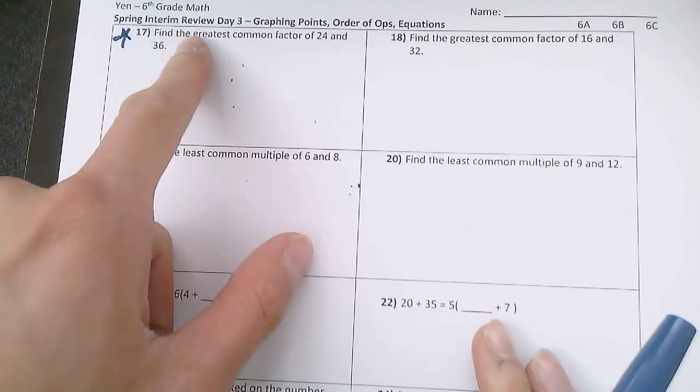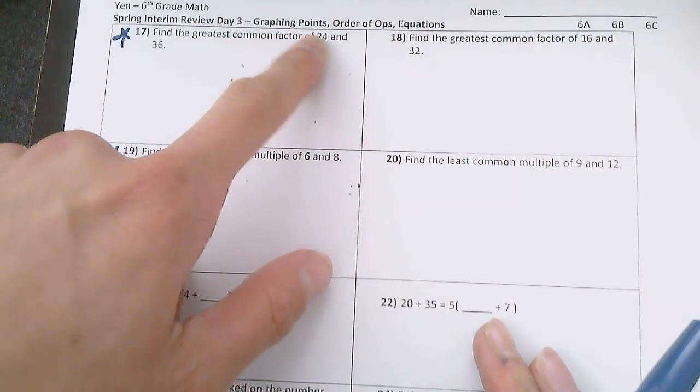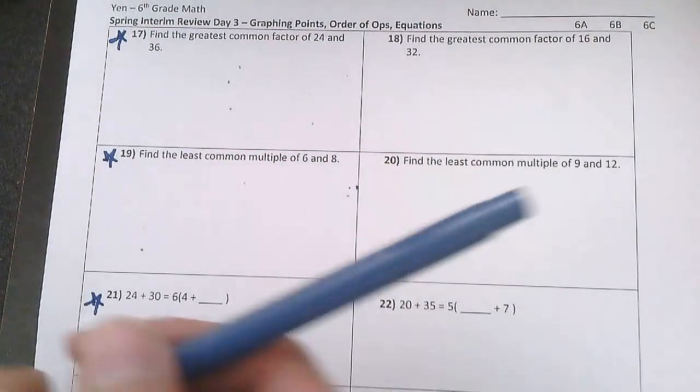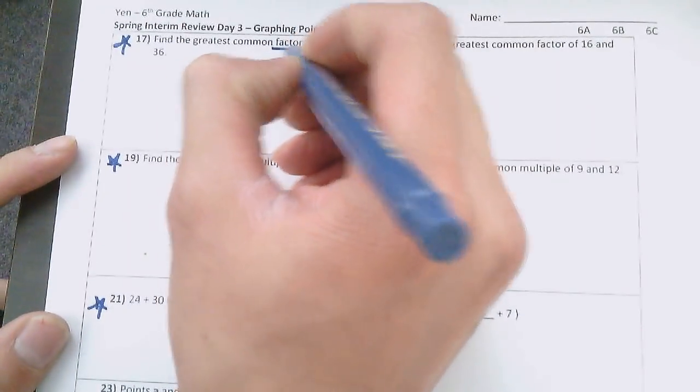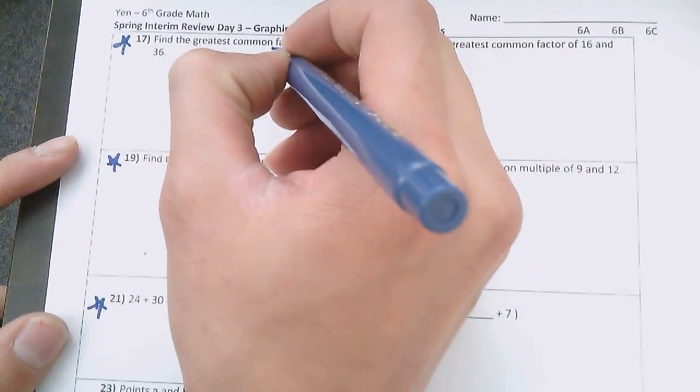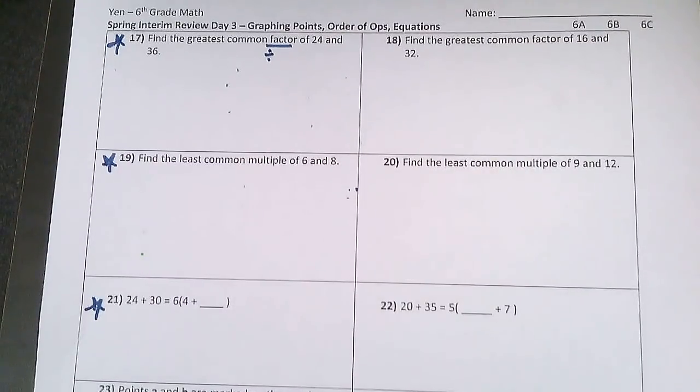For number 17, find the greatest common factor of 24 and 36. Remember, factors are all the numbers that can be divided into a number. So factors, think division.